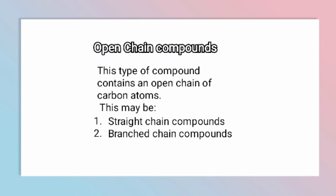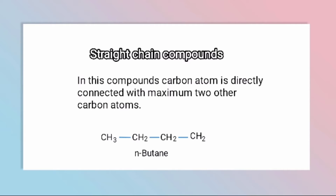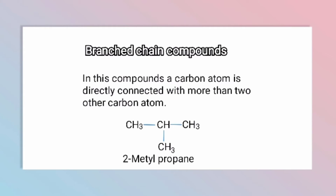Open chain compounds are divided into two types: straight chain compounds and branched chain compounds. In straight chain compounds, carbon atoms are connected to at most two other carbon atoms in a straight chain form. In branched chain compounds, a carbon atom is directly connected to more than two other carbon atoms.